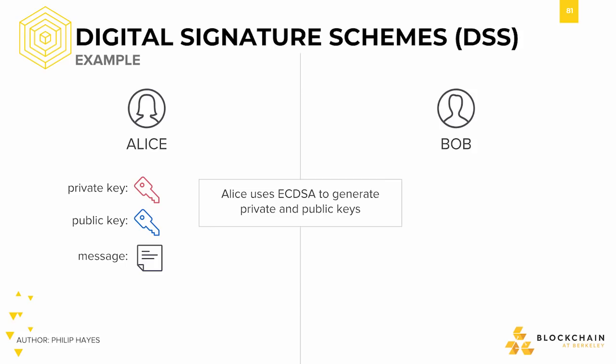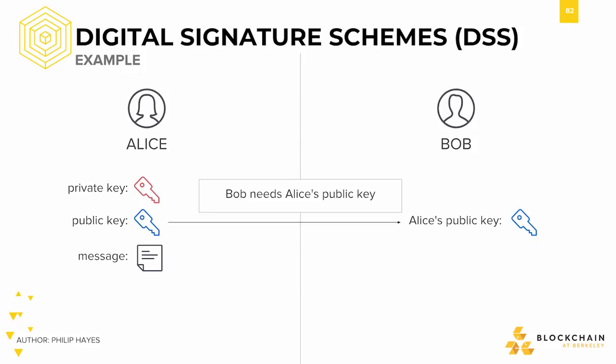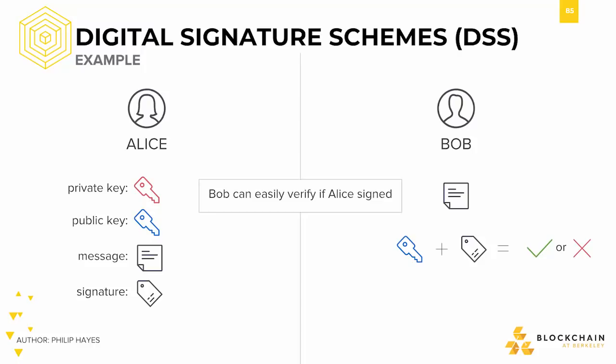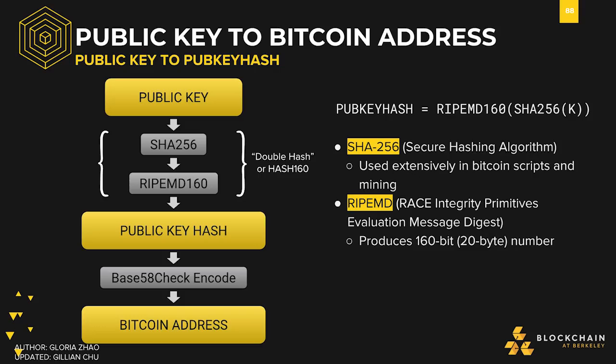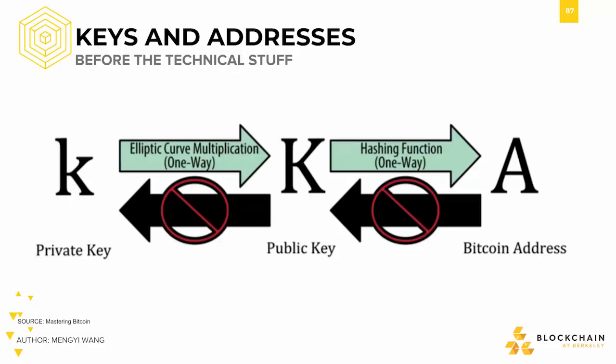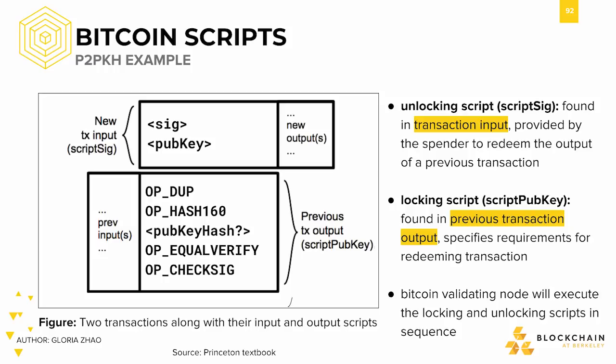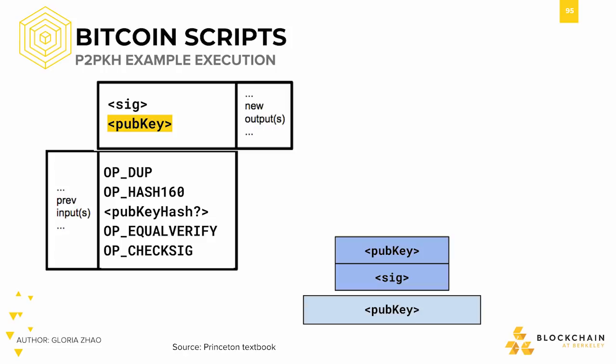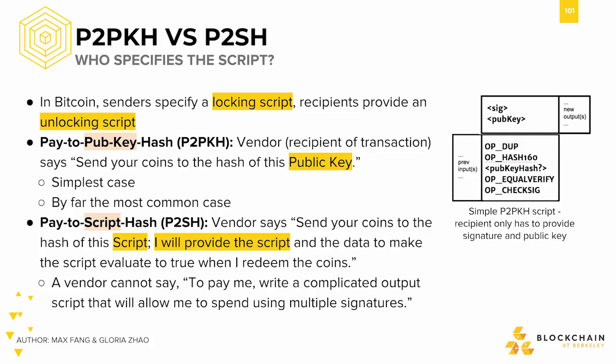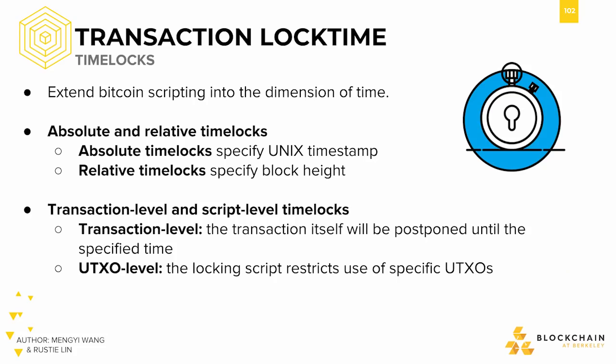We examined digital signature schemes, which show how Alice and Bob can share information and authenticate their messages without revealing any of their secret information. We showed you the connection between private keys, public keys, and Bitcoin addresses, and also showed you how to turn a public key into a Bitcoin address. We took a deeper dive into Bitcoin scripts and showed you how a script can actually unlock your Bitcoin, and also took a look at the various kinds of payment: pay-to-public-key-hash and pay-to-script-hash.